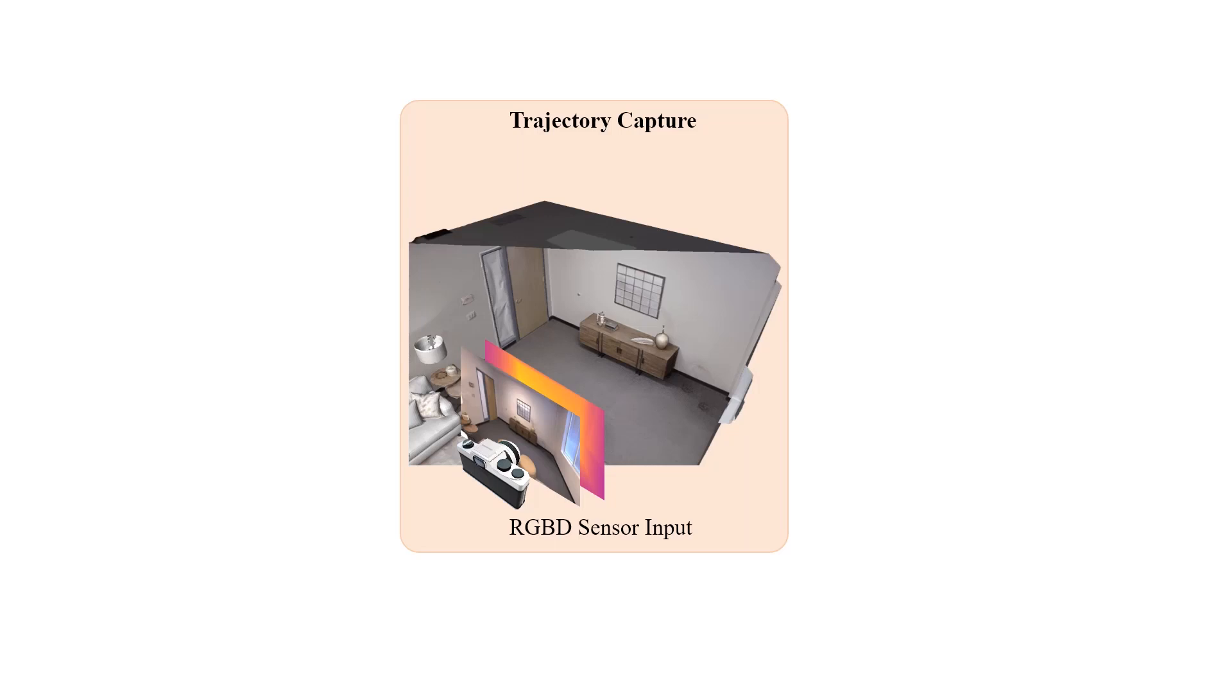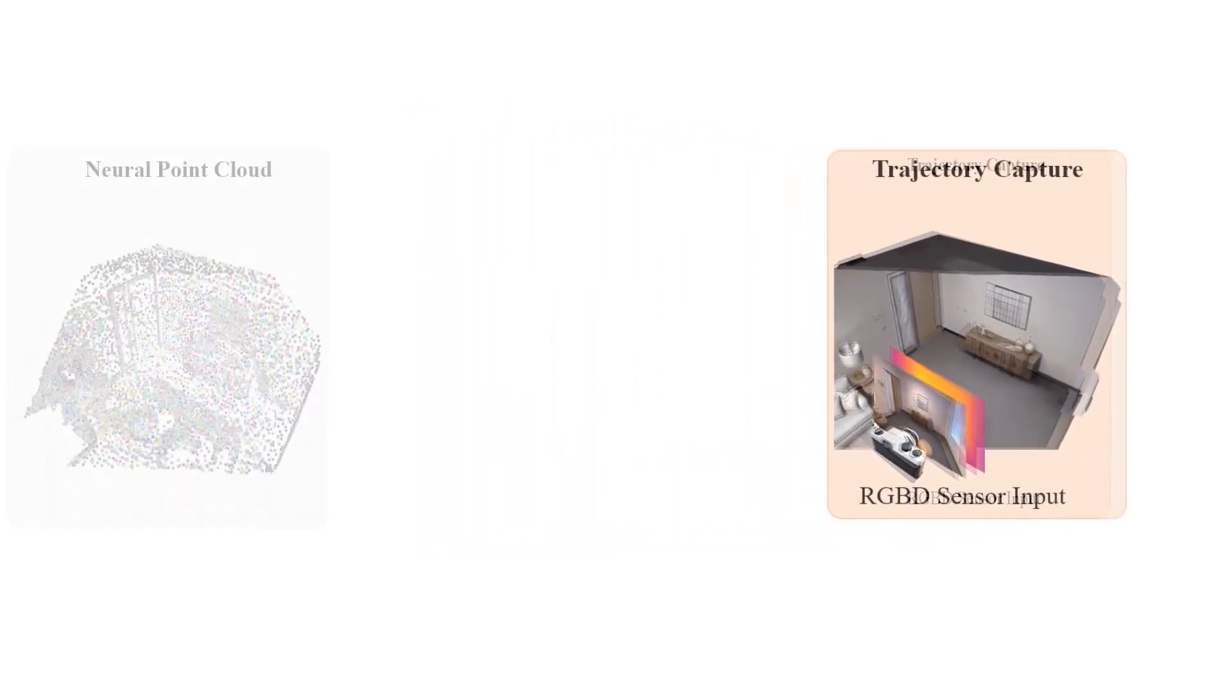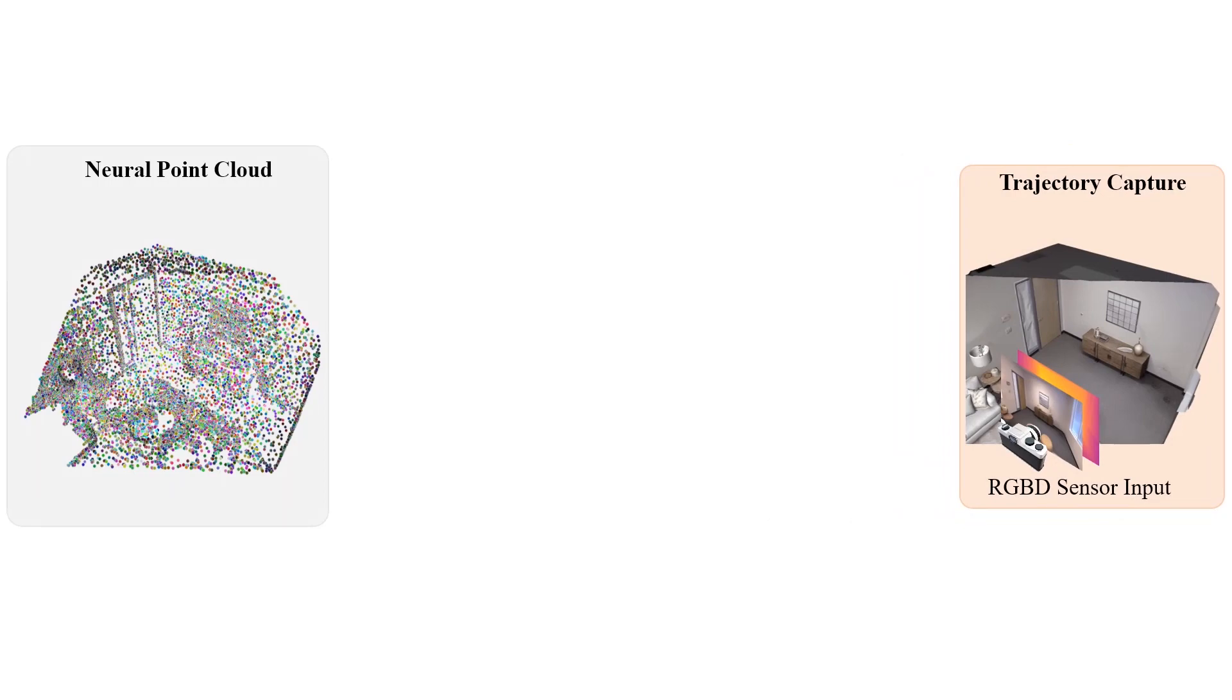Our method works by collecting a sequence of video frames from an RGBD camera. We represent our 3D scene with a so-called neural point cloud, where each point has optimizable features for geometry and color.